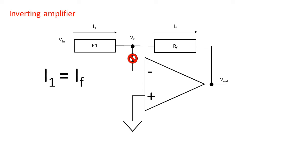Now let's use Ohm's law to turn this equation into an equation that includes the input and output voltage. I1 will be equal to VIN minus V0 over R1.